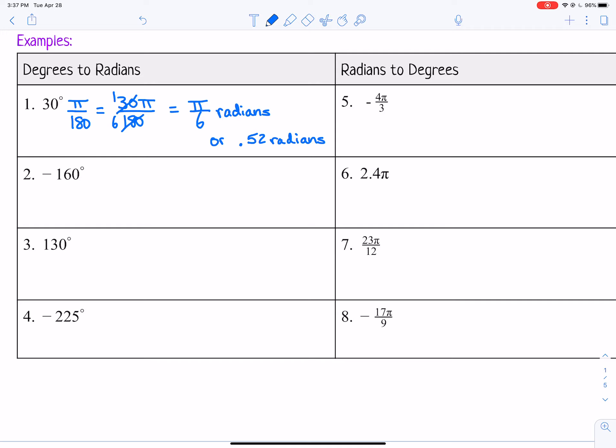For number two, let's convert negative 160. Same thing, we're going to multiply by pi over 180. So that would be negative 160 pi divided by 180. Those both divide evenly by 20, so we could say that would be negative 8 pi over 9 radians.